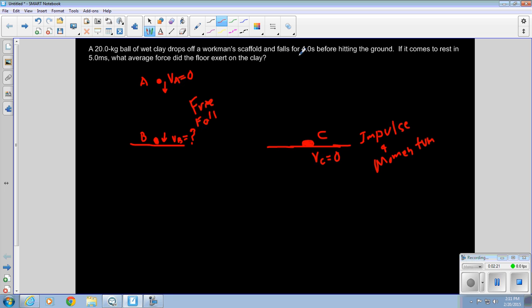But we do know that it falls for four seconds, and we know it has an initial velocity of zero, and we know that because it's free fall, the acceleration in the y direction is equal to negative 9.81 meters per second squared.